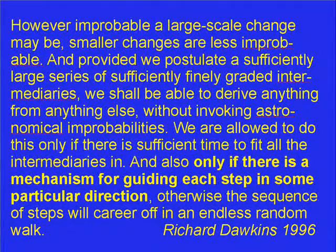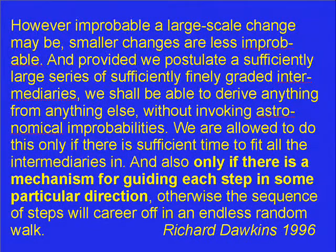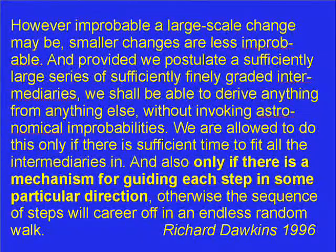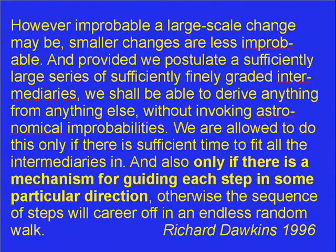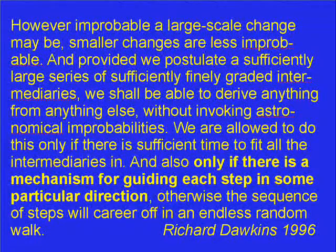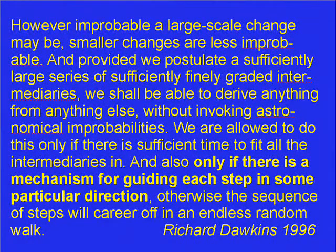However improbable a large-scale change may be, smaller changes are less improbable. And, provided we postulate a sufficiently large series of sufficiently finely graded intermediaries, we shall be able to derive anything from anything else, without invoking astronomical improbabilities. We are allowed to do this only if there is sufficient time to fit all the intermediaries in, and also only if there is a mechanism for guiding each step in some particular direction. Otherwise, the sequence of steps will career off in an endless random walk.